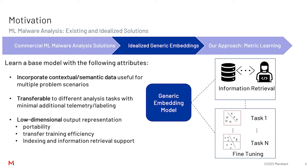Wouldn't it be great if we had just one shared representation that incorporates a bunch of contextual and semantic data, and then use this for multiple problem scenarios so that we can easily transfer without necessarily having tons of labeled data — maybe just a few samples — and that we can easily do information retrieval with. For that, it would also be wonderful to have a low-dimensional representation for portability and to keep storage costs manageable.